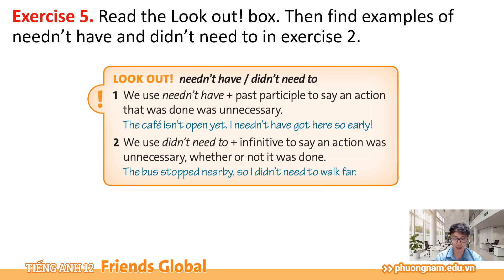Rule 2: We use didn't need to plus infinitive to say an action was unnecessary whether or not it was done — chúng ta sẽ dùng didn't need to cùng với động từ nguyên mẫu để nói rằng một hành động không cần thiết, không quan trọng là hành động đã được làm hay chưa. Ví dụ: The bus stopped nearby so I didn't need to walk far — cái xe buýt dừng ở gần đây cho nên tôi không cần phải đi xa. Đối với tình huống số 2 chúng ta không quan trọng là bạn này đã đi xa chưa, didn't need to chỉ đơn giản thể hiện hành động này là không cần thiết.